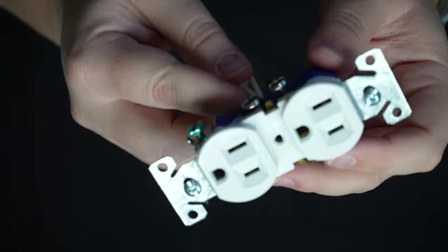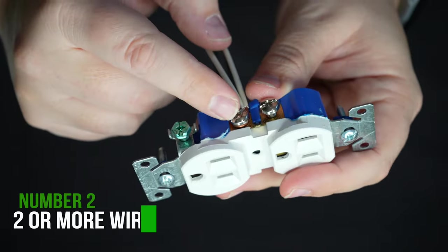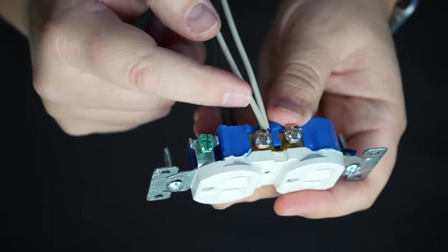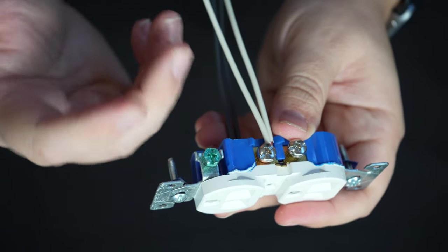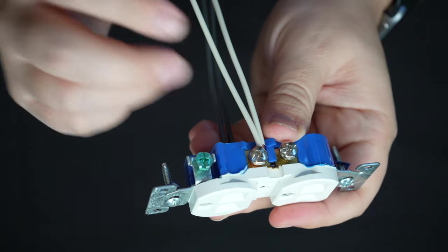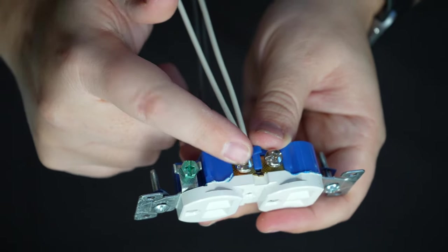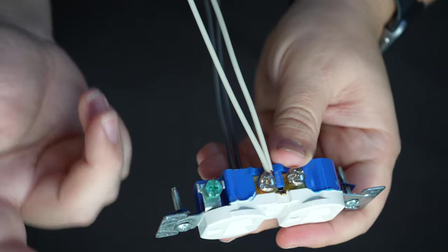So another common issue I see DIYers make is by placing two wires underneath one terminal screw. So you can see here there's two neutral wires underneath this terminal screw. And that's usually done because there are more sets of wires in the box that can be handled by just the number of terminal screws that are actually on the receptacle. So in order to get around that issue, they'll double up the wires on a terminal screw and then they'll tighten it down instead of doing it the right way, which I'll show you what the right way is here in a second.